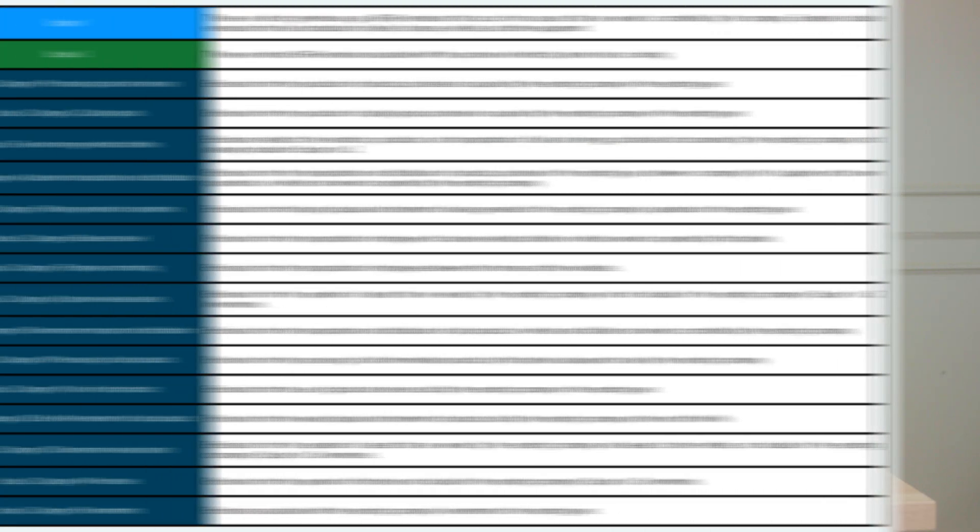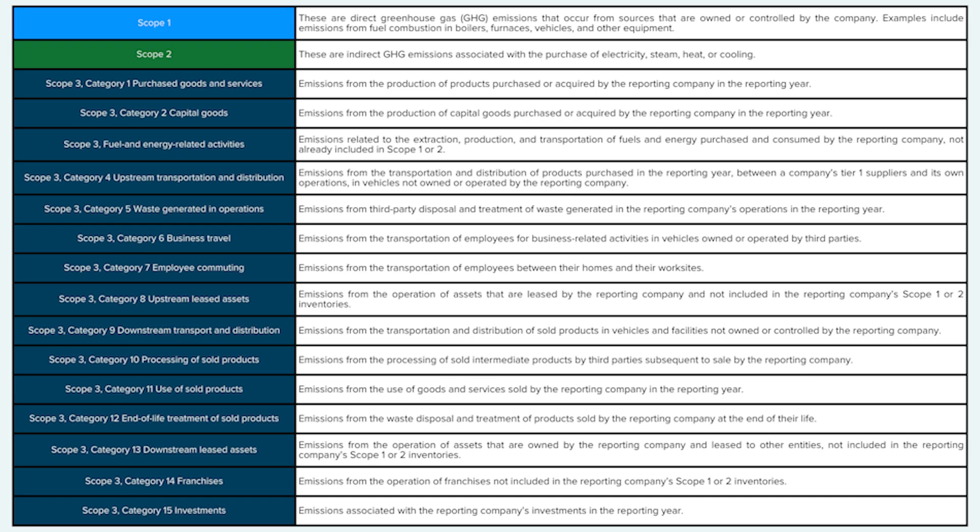For detailed information on each of these scopes and categories and the underlying activities, please search the descriptions you can see on the screen for the relevant scope and category. Now at this stage, I think it's really important to stress the importance of perspective when it comes to categorizing your emitting activities into scopes. We'll go into this in a bit more detail in a later video to help tease out some of the intricacies.